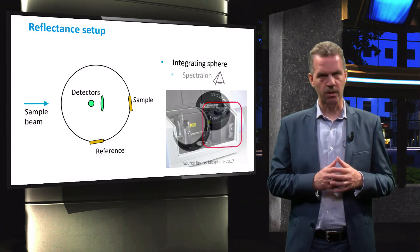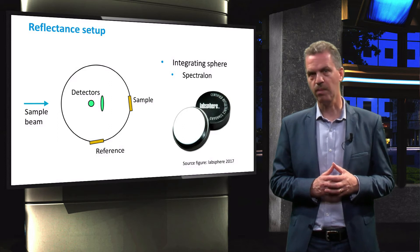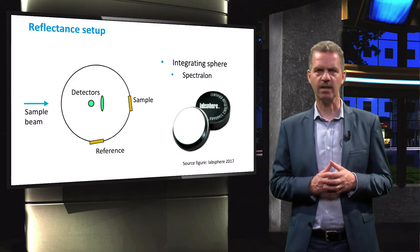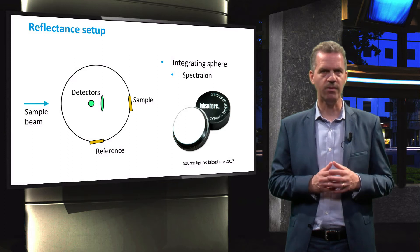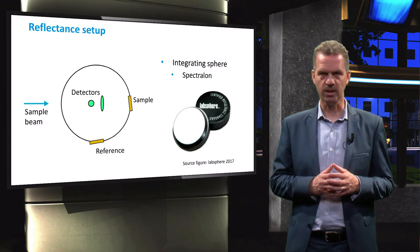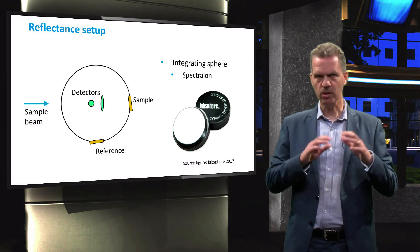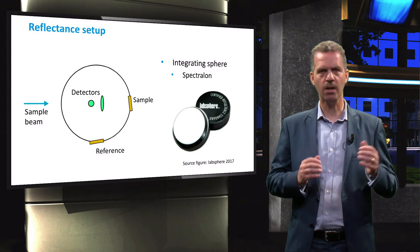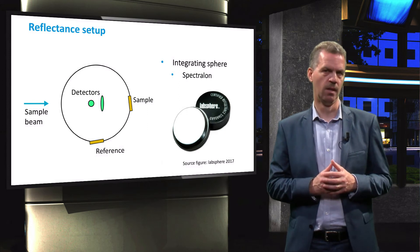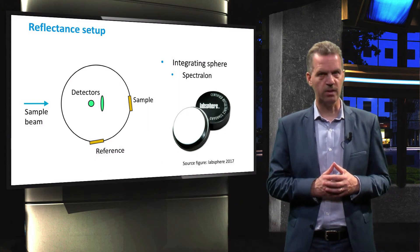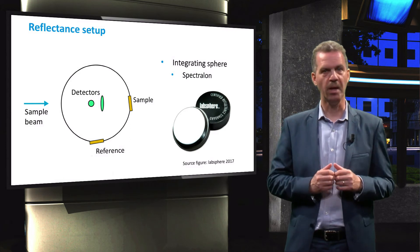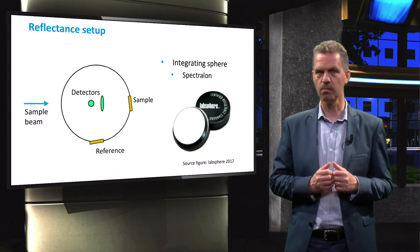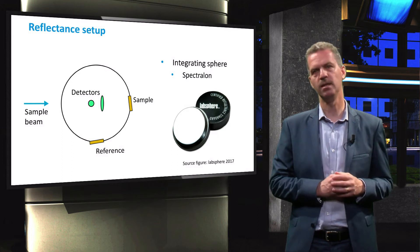The interior of this sphere is coated with spectralon, which is a highly scattering and reflective material. If light enters the integrating sphere, it will reflect multiple times and scatter in all directions. The electromagnetic field will therefore be homogeneous inside the sphere, making it possible to evaluate the smallest light intensities at a single point in the sphere.